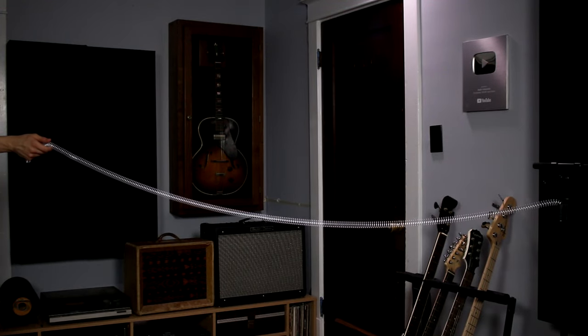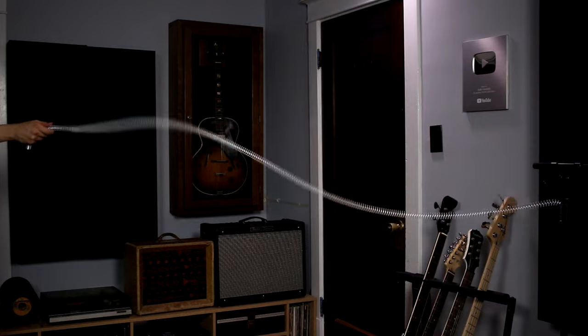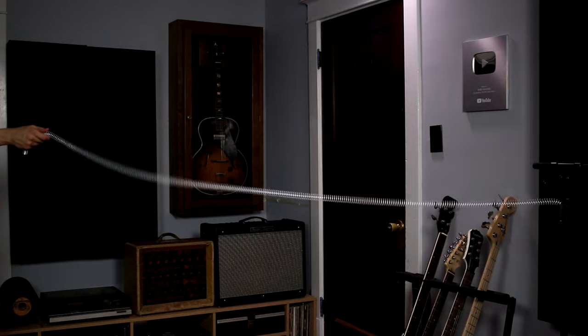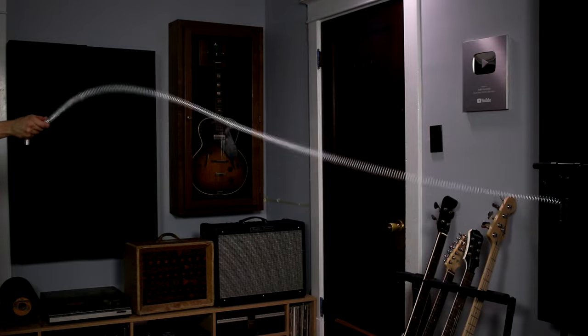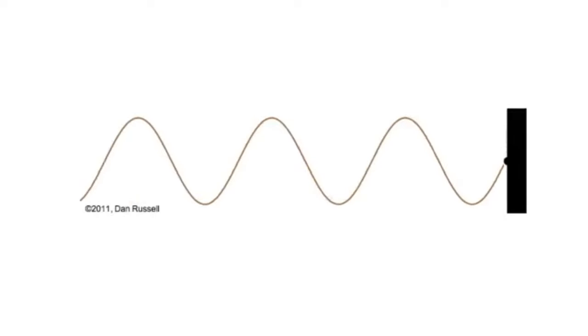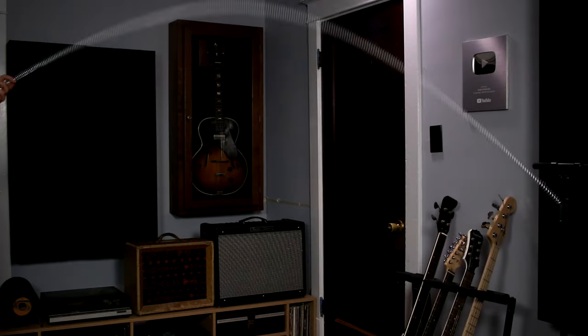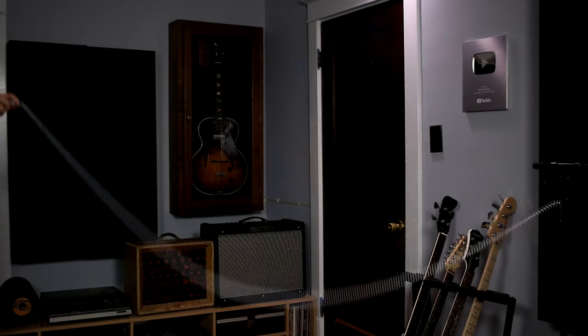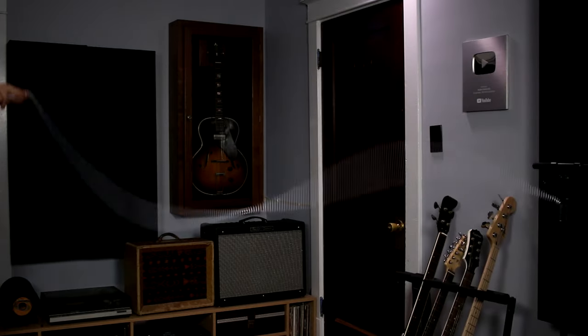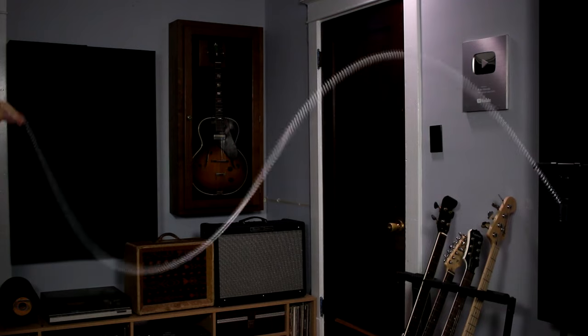Let's set up a few demonstrations so that we can visualize what's going on here. This spring is attached to a fixed point on one end. When I move the spring, the wave travels to the other end and reflects back to me. This animation by Dr. Dan Russell might make it easier to see what's happening in slow motion. When I oscillate the spring at its resonant frequency, the reflections will reinforce the waves that I'm creating, which causes a buildup of energy at that corresponding wavelength.